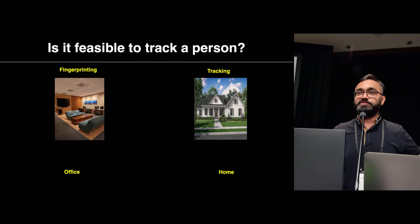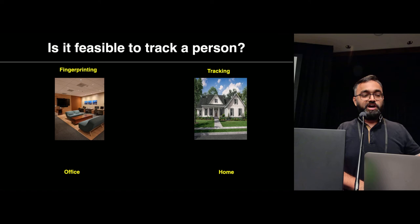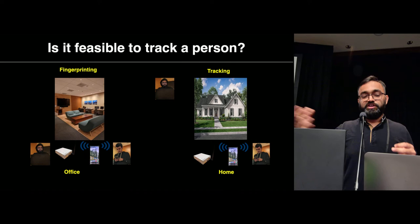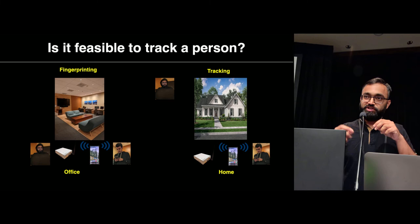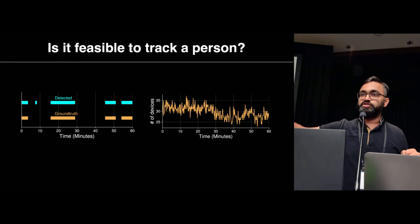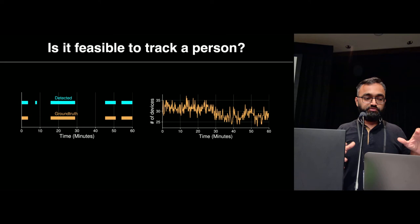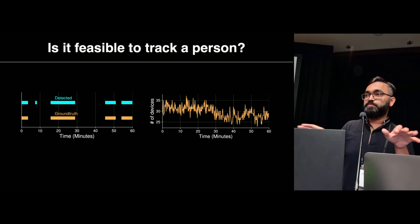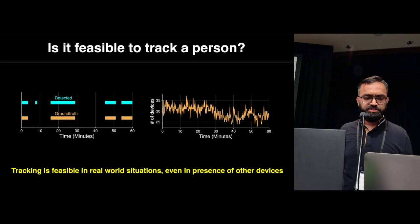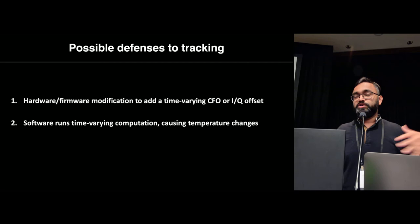Finally, we simulated an actual person-tracking scenario: an attacker fingerprints the victim's device at an office location, then places their SDR at the victim's home to monitor entries and exits. We ran tracking instances every 10 seconds for about one hour to detect when the person went in or out. We were able to detect this with pretty high accuracy, even with 30 to 40 other devices always present nearby. This demonstrates that physical layer BLE tracking is feasible in very real-world situations, even in the presence of many surrounding devices.